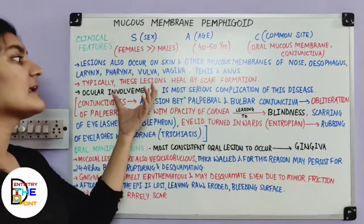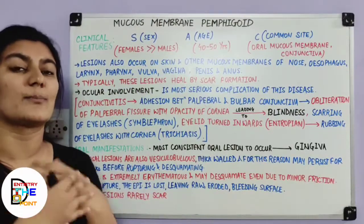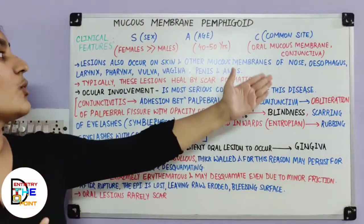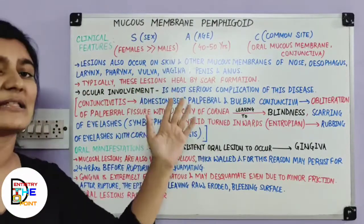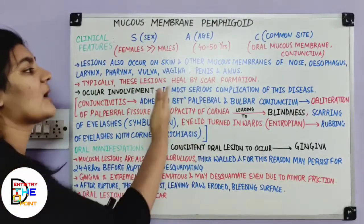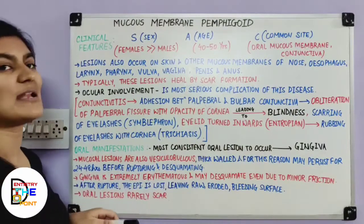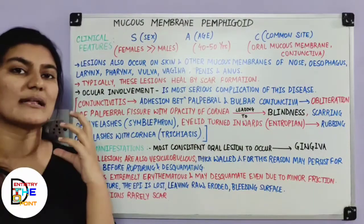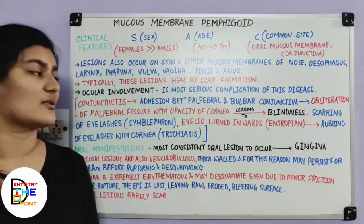The cutaneous lesions — those appearing on the nose, esophagus, pharynx, or genitalia — heal by scar formation. However, as you will see in the oral manifestations, when the lesions occur in the oral cavity, they do not scar.